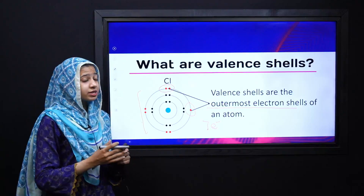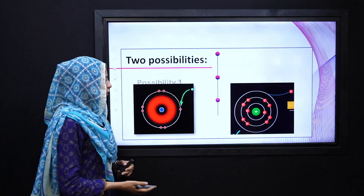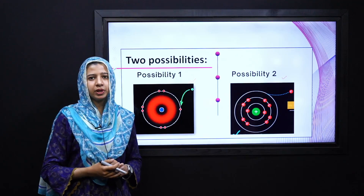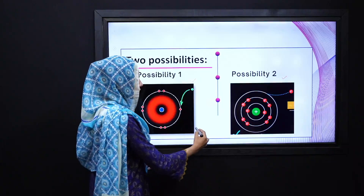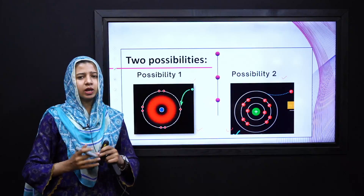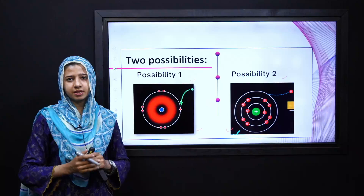Chlorine apne aap ko stable karne ke liye do possibilities ko follow karega. Ya toh in order to achieving the octet rule, ye electron ko gain kar sakta hai. Ya toh possibility do ke according, ye electron ko apne andar se withdraw karega, exclude kar dayega. In dono possibilities mein se kisi bhi ek possibility ko achieve karke atom khud ko stable kar sakta hai.